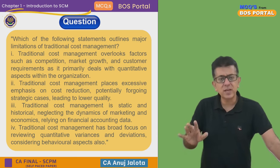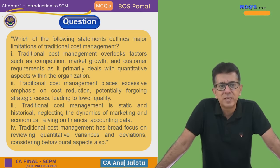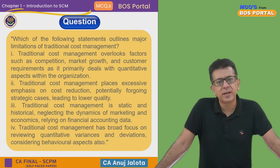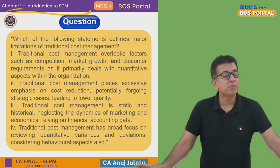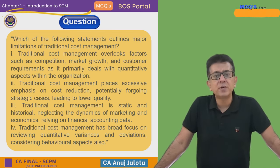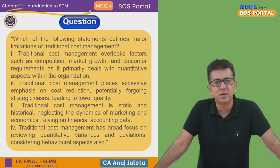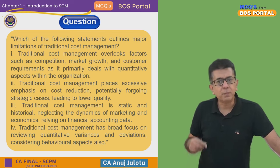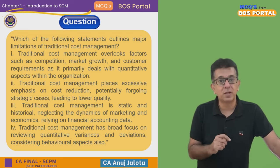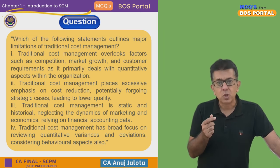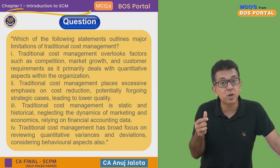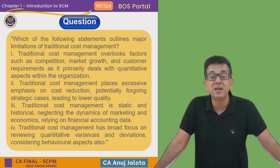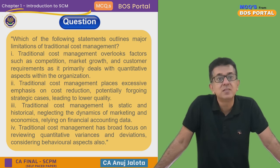Statement two: traditional cost management places excessive emphasis on cost reduction, potentially foregoing strategic cases leading to lower quality. This is absolutely correct and a very big limitation. For example, in standard costing from CA Inter — if you should have purchased raw material at ₹4 but bought it at ₹3, the variance is favorable. But it could be bad news because you may have purchased inferior quality, which damages goodwill and reduces sales. Traditional cost management never considered these aspects.